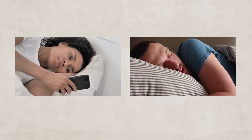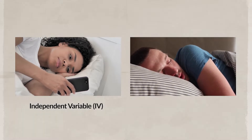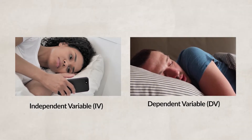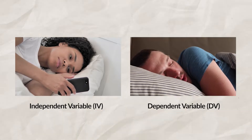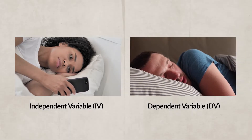For example, let's say I was conducting an experiment to better understand how using a phone before you go to sleep impacts your sleep. The IV, or independent variable, would be the phone being used before bed, and the DV, the dependent variable, would be the quality or amount of sleep that you get.